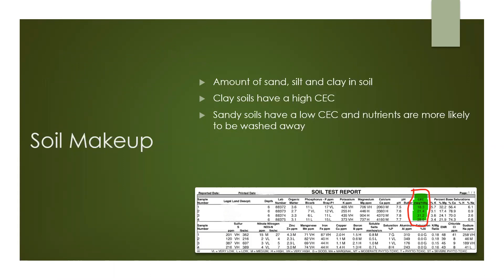A soil's cation exchange capacity, commonly referred to as CEC, is a measurement of the soil's ability to hold on to cations — things like iron, copper, zinc and manganese. These cations have a positive charge. Clay soils have a high negative charge and therefore a high CEC, whereas sandy soils have a low CEC and nutrients are more likely to be washed away. You can see your soil CEC on your soil test report as highlighted in the green area.